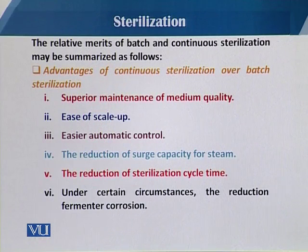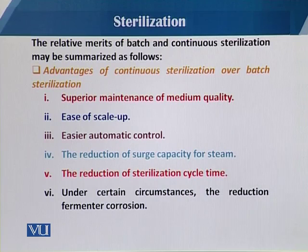Each mode has its own limitations and benefits — we can call them advantages and disadvantages — which represent the relative merits of batch and continuous sterilization. In batch sterilization, all the medium is sterilized at the same time. In continuous sterilization, medium is sterilized in a stream and then gradually fed into the fermentation vessel.